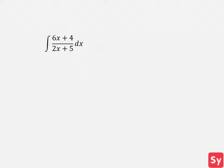Last example. We have the integral of 6x plus 4 over 2x plus 5. We see that the degree of the numerator is equal to the degree of the denominator, so we will use long division. We put the numerator inside the division bracket and the denominator outside of it. To make 2x equal to 6x we put down a 3 and multiply the denominator by 3. We then subtract and get negative 11, which is our remainder. We put the remainder over the denominator and add it to 3.